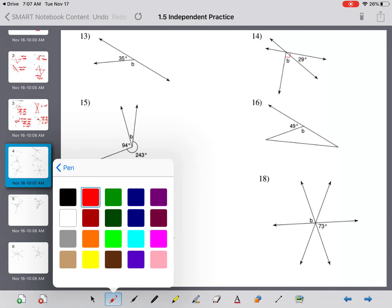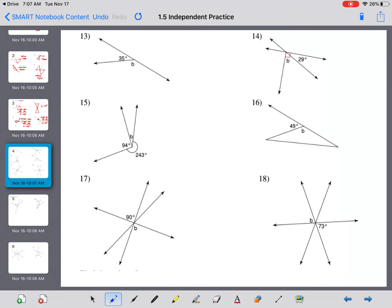Here we have a linear pair that make a straight line. So B plus 35 equals 180. Subtract 35 on both sides. And B equals 180 minus 35. That's 145 degrees.